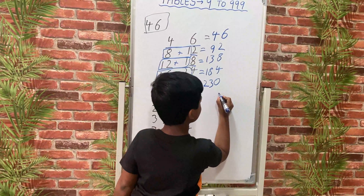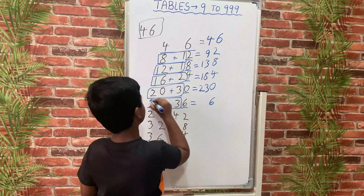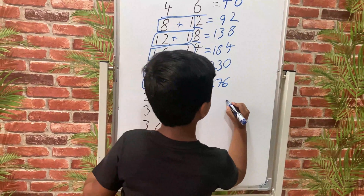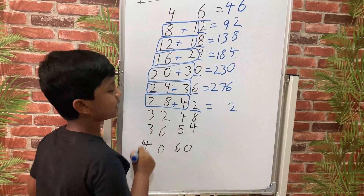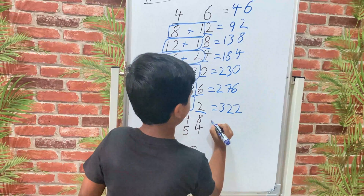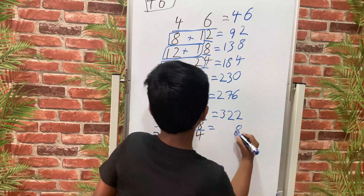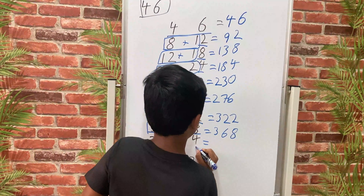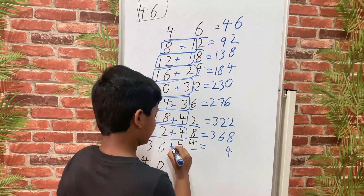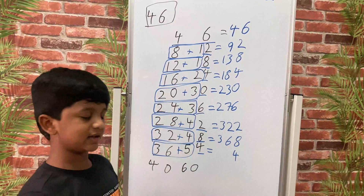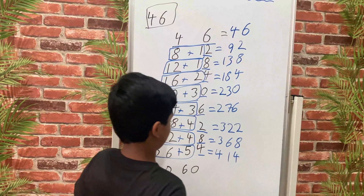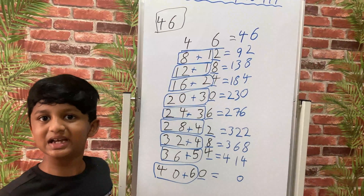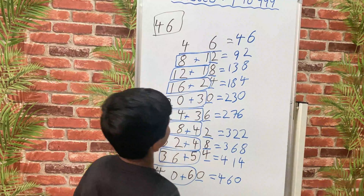Next, write 6 and add: 24 plus 3 is 27, giving 276. Write 2 and add: 28 plus 4 is 32, giving 322. Then write 8 and add: 32 plus 4 is 36, giving 368. Write 4 and add: 36 plus 5 is 41, giving 414. Write 0 and add: 40 plus 6 is 46, giving 460. And this is our 46th table.